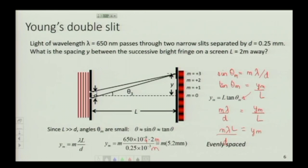So all those distances are expressed in meters, and I've taken the final answer and written it in millimeters times m, where this m is the order. So this m over here is the order of the fringe. So it tells me that the fringes are going to be evenly spaced.